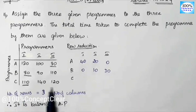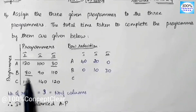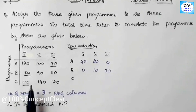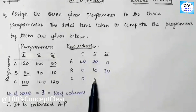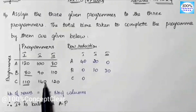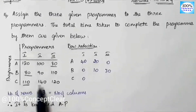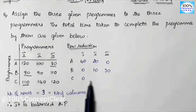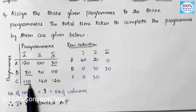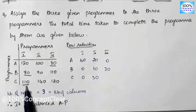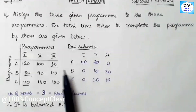Now in the third row, the minimum value is 110. So 110 minus 110 equals 0. We have 140 and the minimum value is 110, so 140 minus 110 equals 30. Next, 120 minus 110 equals 10. Now we complete row reduction.